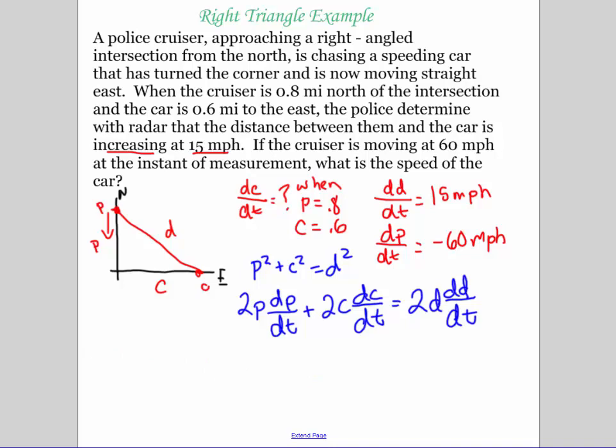Okay, so now you can divide everything by two, so I'm just really going to kind of ignore these twos in here. So now I'm going to fill in. Our police cruiser is 0.8 miles from our intersection. Our police cruiser is moving at negative 60. C is 0.6. dC/dt is what I'm looking for.